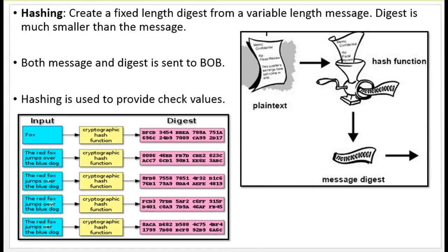Next is hashing. Hashing is a technique that creates a fixed-length digest from variable-length messages — that is, it converts a set of strings into a single fixed-length string, where the digest is much smaller than the message. Both the message and the digest have to be sent by the sender. An example of a simple hash function: the first string is 'fox', which undergoes the hash function and creates a digest. In the second case, the message is much bigger: 'The red fox jumps over the blue dog.' It undergoes the hash function and creates another digest.